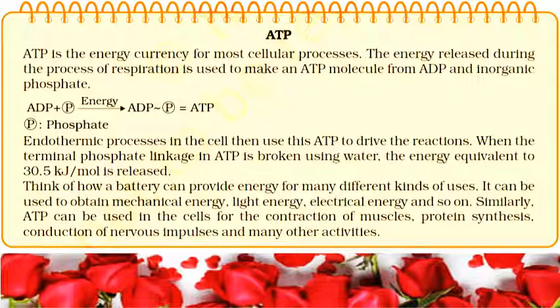The energy released during cellular respiration is immediately used to synthesize a molecule called ATP, which is used to fuel all other activities in the cell. In this process, ATP is broken down giving rise to a fixed amount of energy which can drive the endothermic reactions taking place in the cell. ATP is the energy currency for most cellular processes.